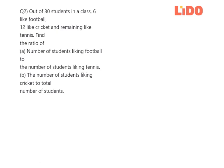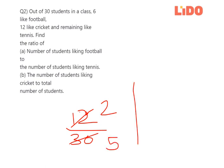So your ratio will be 12 is to 30. Let's simplify it: 12 upon 30, divide by 6 you'll get 2, divide by 6 you'll get 5. So your answer is 2 is to 5.